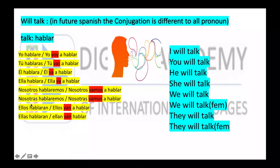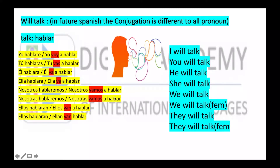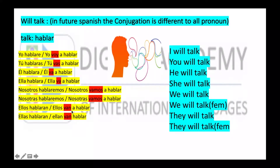The other way — yo voy a hablar, tú vas a hablar, él va a hablar, ella va a hablar, nosotros vamos a hablar, ellos van a hablar, ellas van a hablar. The question is: when do I have to use this conjugation, and when do I use the easy conjugation? No matter — you can use any of them; there is no difference in Spanish.